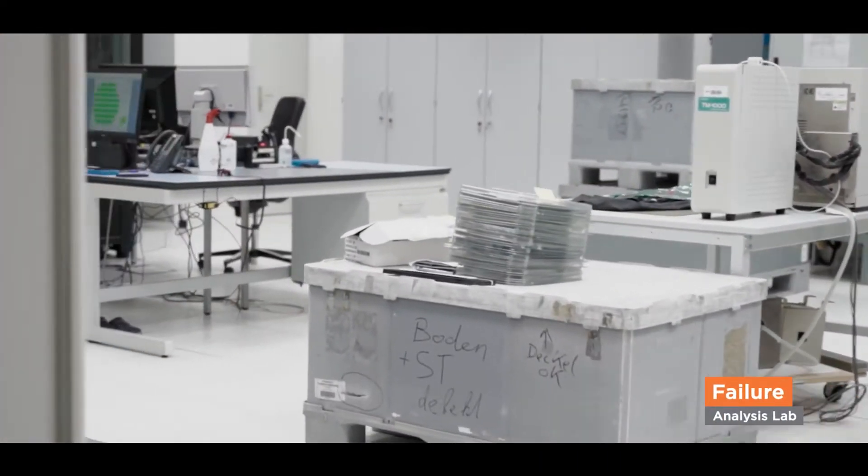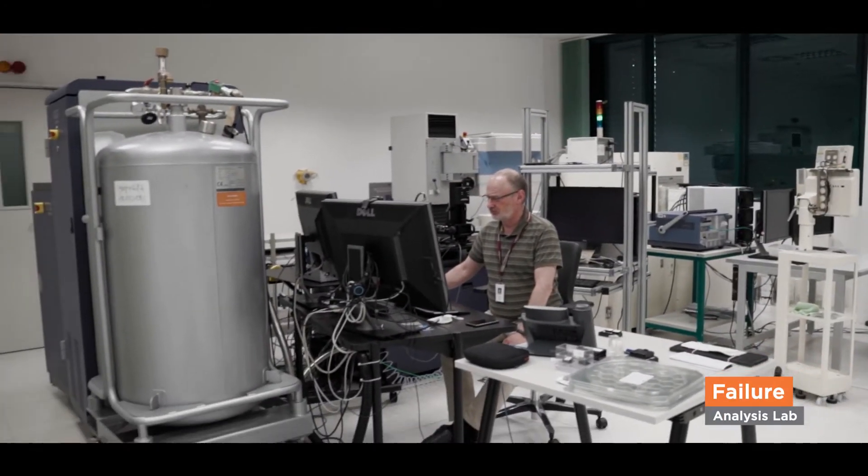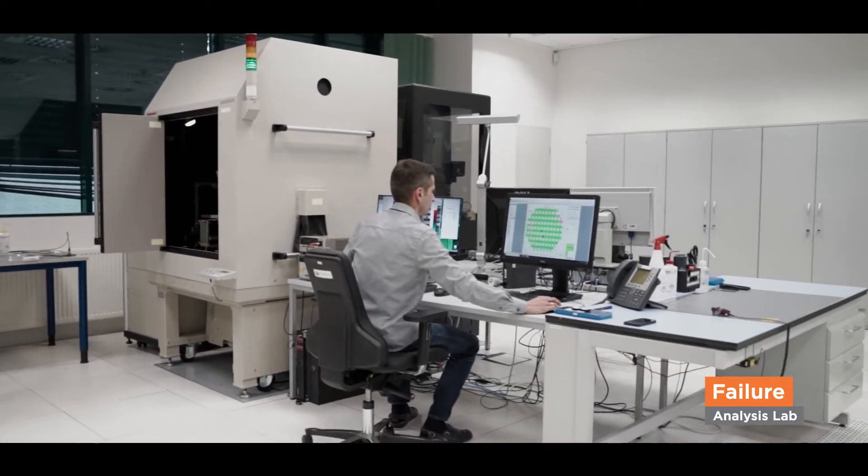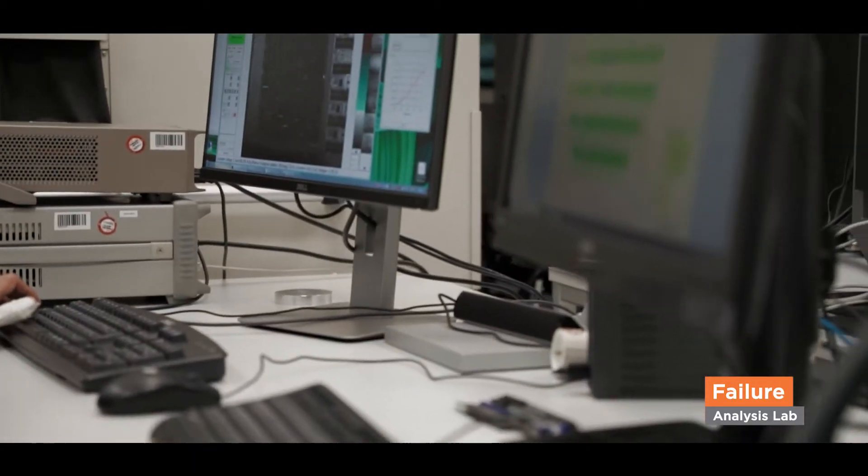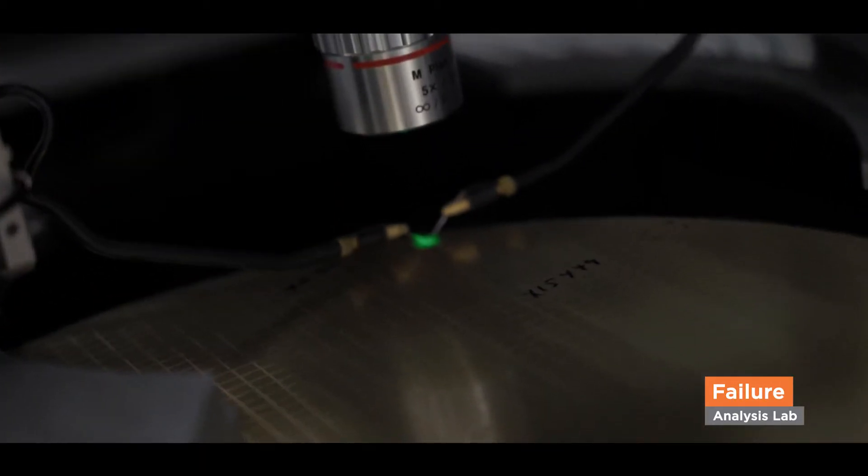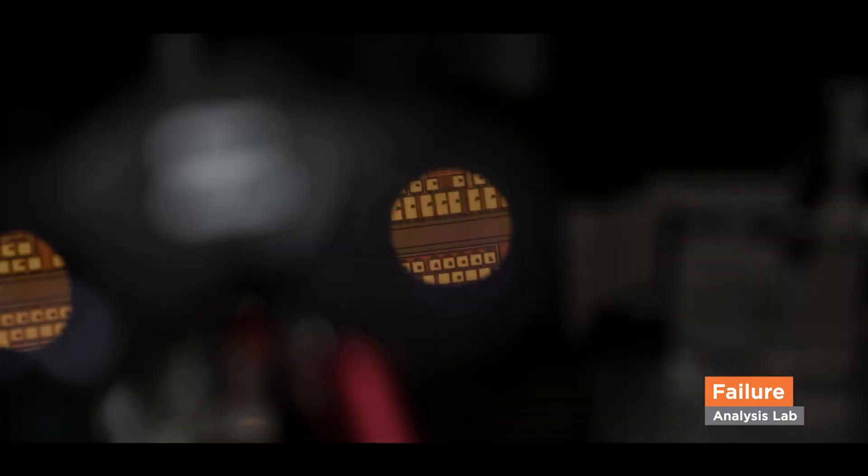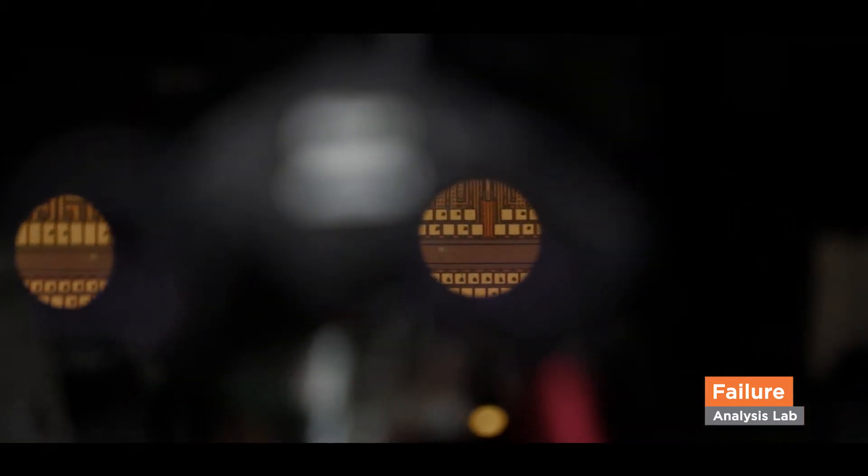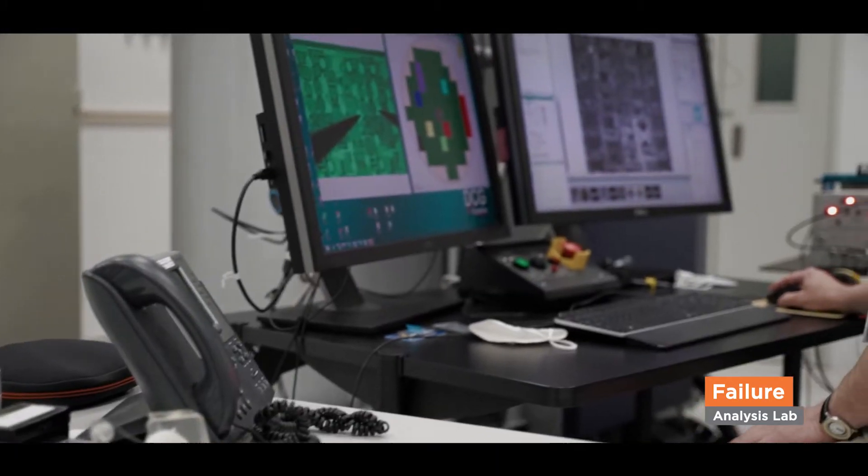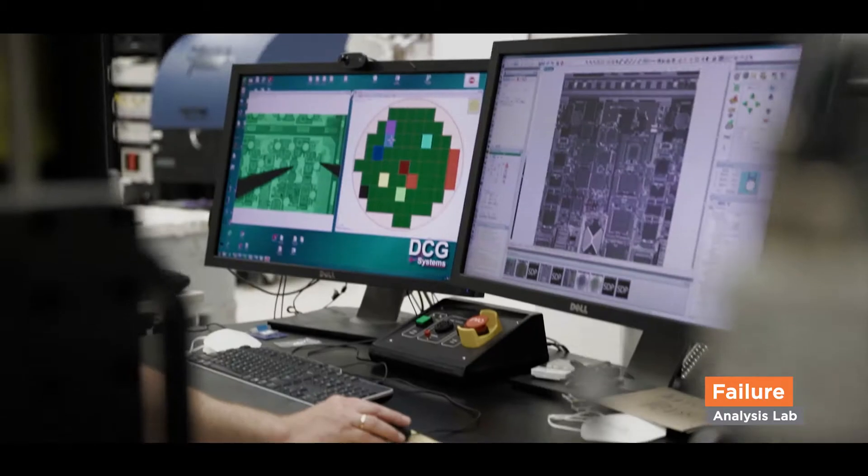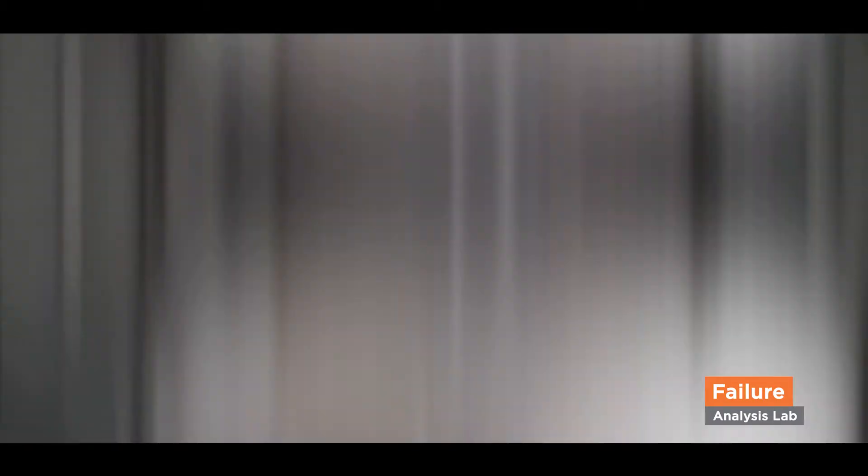Welcome to the physical failure analysis team. Our team supports several analytical methods that help investigate yield issues related to fab or customer issues. If we get analysis requests for wafers or chips and we don't know the exact position of the failure, we need to localize them first. This is done by using methods like photon emission, thermal emission, or OBIRCH.